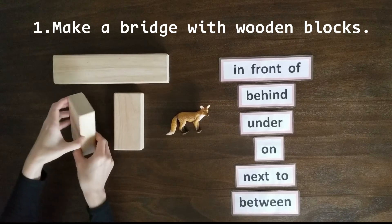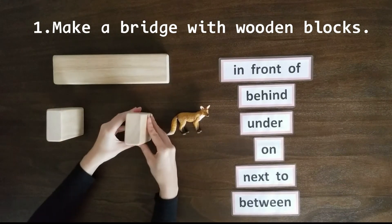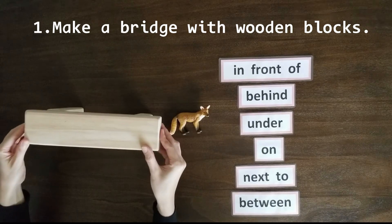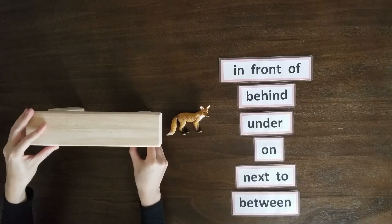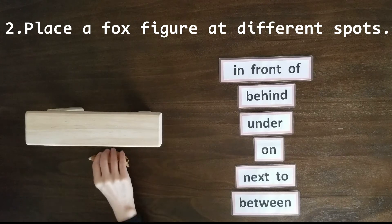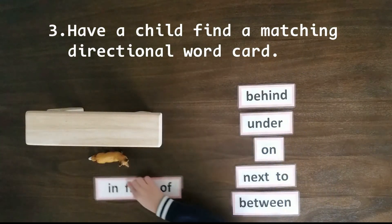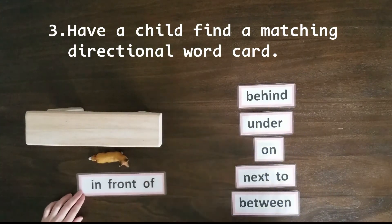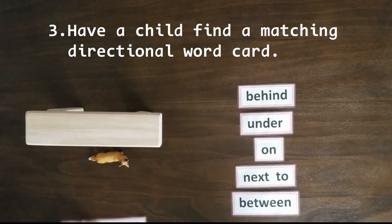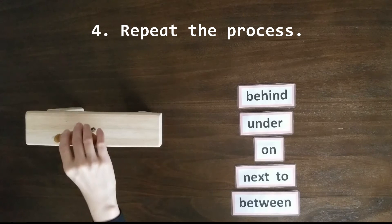First, make a bridge with wooden blocks and place a fox figure at different spots. Have a child find the matching directional word card and place it in front of the bridge. Repeat the process.